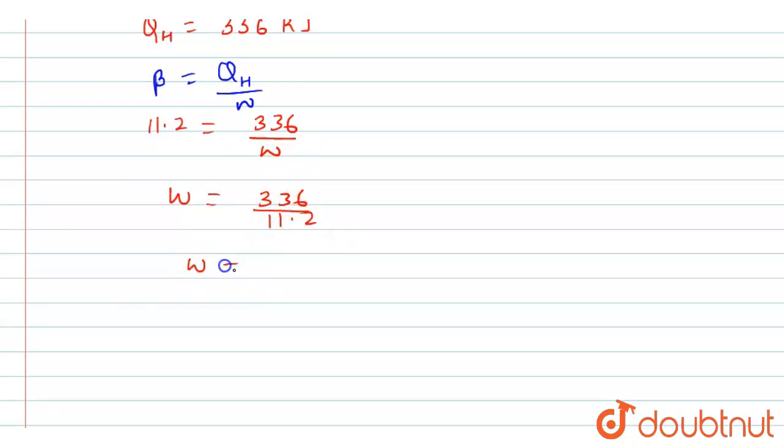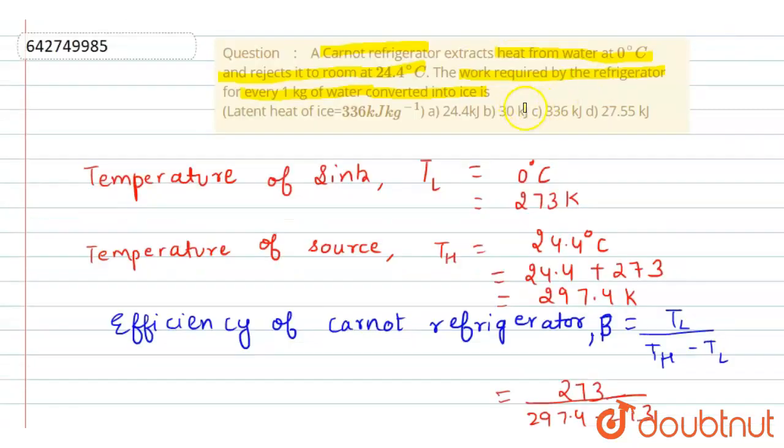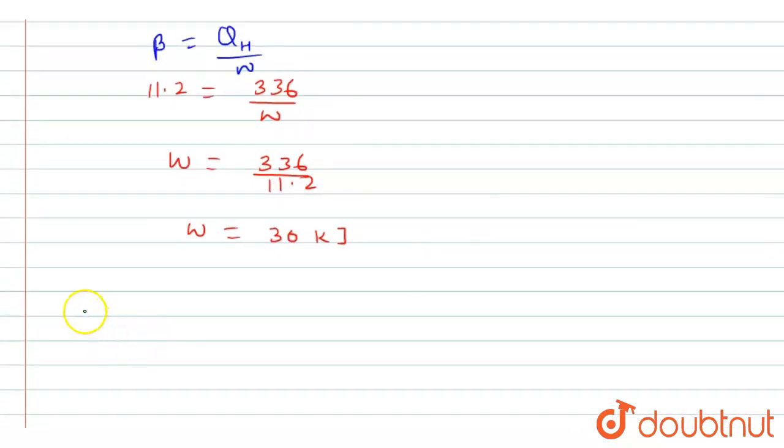It gives us an answer that is 30 kilojoule. So according to this explanation, which option is correct? 30 kilojoule is in our option B. So we can write the final answer. Option B is the correct option. This is the answer of this question.